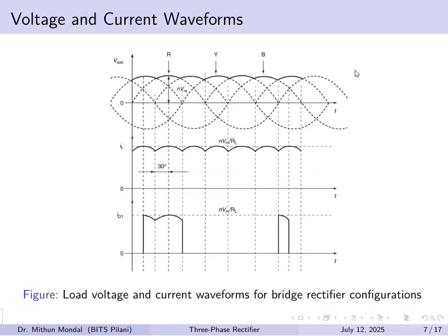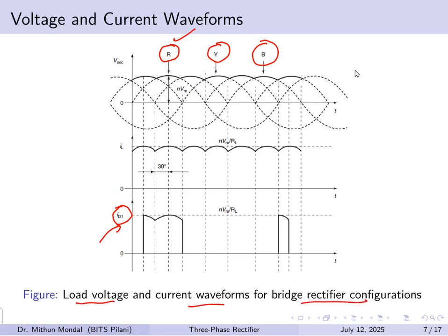Looking at the voltage and current waveforms, the three-phase AC input is shown as R, Y, and B phases. The load current and diode conduction for diode D1 are illustrated, showing the load voltage and current waveforms for the bridge rectifier configuration.